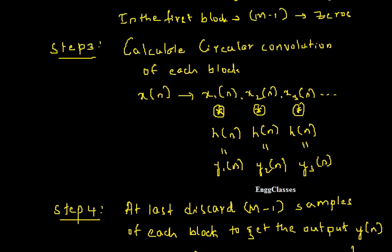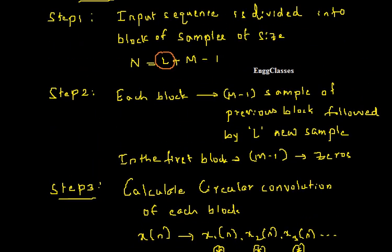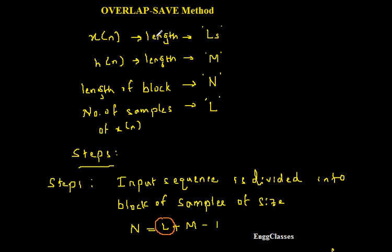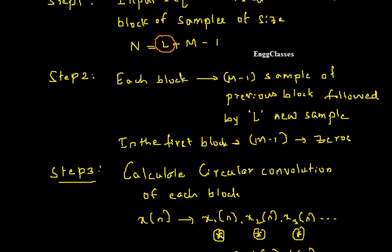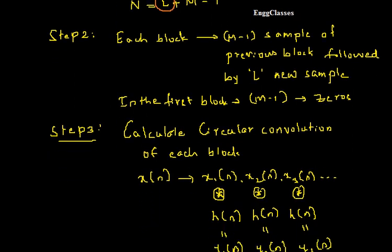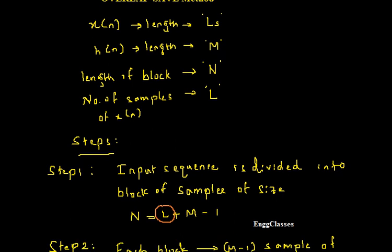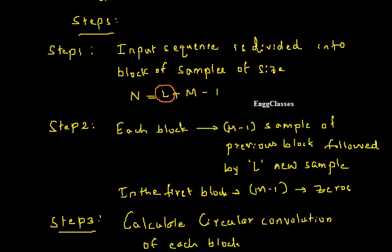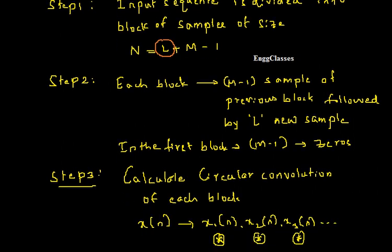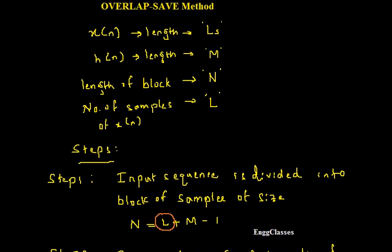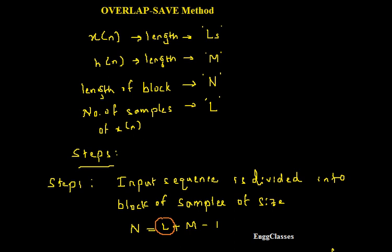These are the four easy steps involved in solving the overlap save method. I hope you have understood. We will understand this much better once we consider numericals in upcoming videos. Before that, knowing all the terminologies and the four steps is essential. Till then, thank you everyone, and subscribe to our channel NG Classes for more videos on digital signal processing.